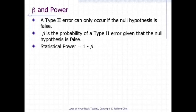A type 2 error can only occur if the null hypothesis is false. If the null hypothesis is false, then the probability of a type 2 error is called beta. The probability of correctly rejecting a false null hypothesis equals 1 minus beta and is called statistical power. Statistical power is covered in detail in another chapter.